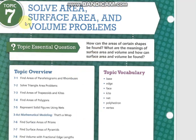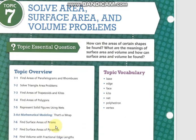The next topic is a very interesting one — Topic 7. This topic deals with areas, volume, and surface area. We are going to learn the difference between area, surface area, and volume. We will learn about some basic areas and how to find the surface area and volume for some 3D shapes.